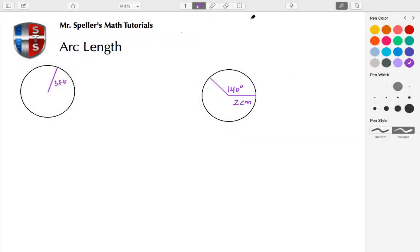Alright, let's get started with the arc length here. There's a formula that should come to mind and that formula is the formula for circumference: C is equal to 2πR where R is the radius, or C is equal to πD where D is the diameter.